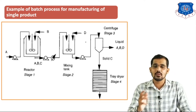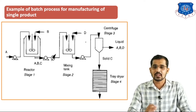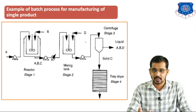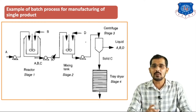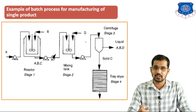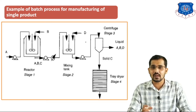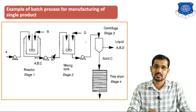The reactor is used for the reaction purpose. The mixing tank with agitator is used for better mixing. The centrifuge is used to separate the solid part from the liquid. Lastly, the tray dryer is used for the drying purpose.